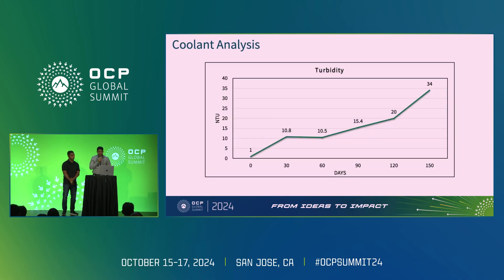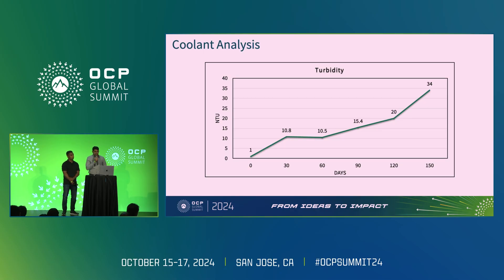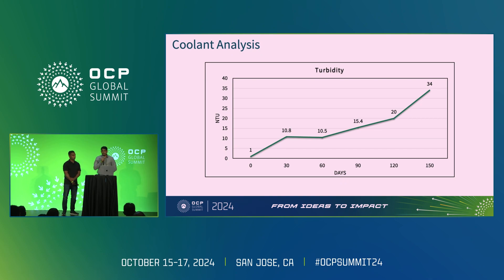On the turbidity analysis, at day zero the baseline sample had 1 NTU of turbidity on average. At the 150th day, the turbidity value increased to 34 NTU. We are further investigating the correlation of turbidity and how it would affect the coolant's performance and how it correlates with the erosion mechanism. We are still in an experimental phase of that.